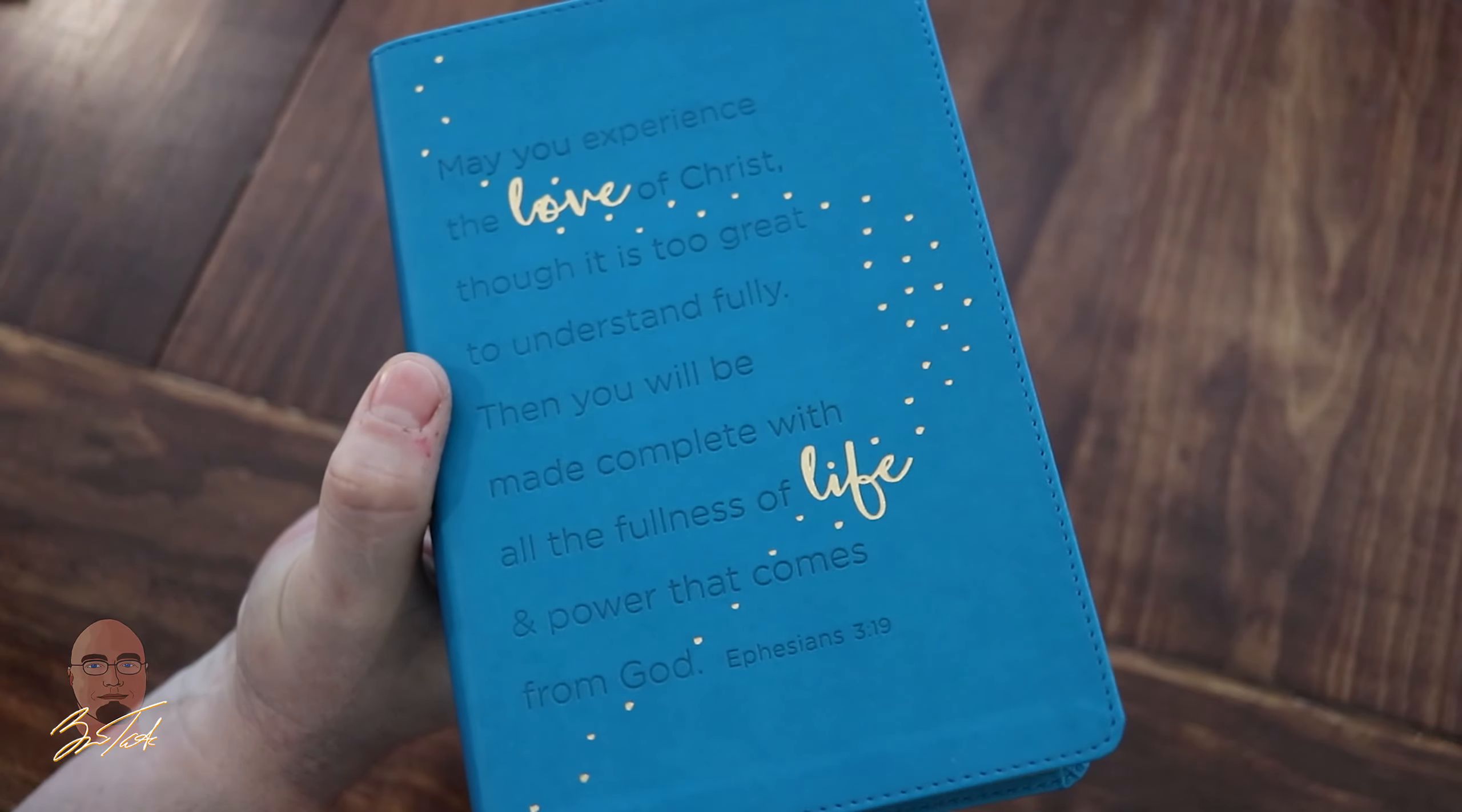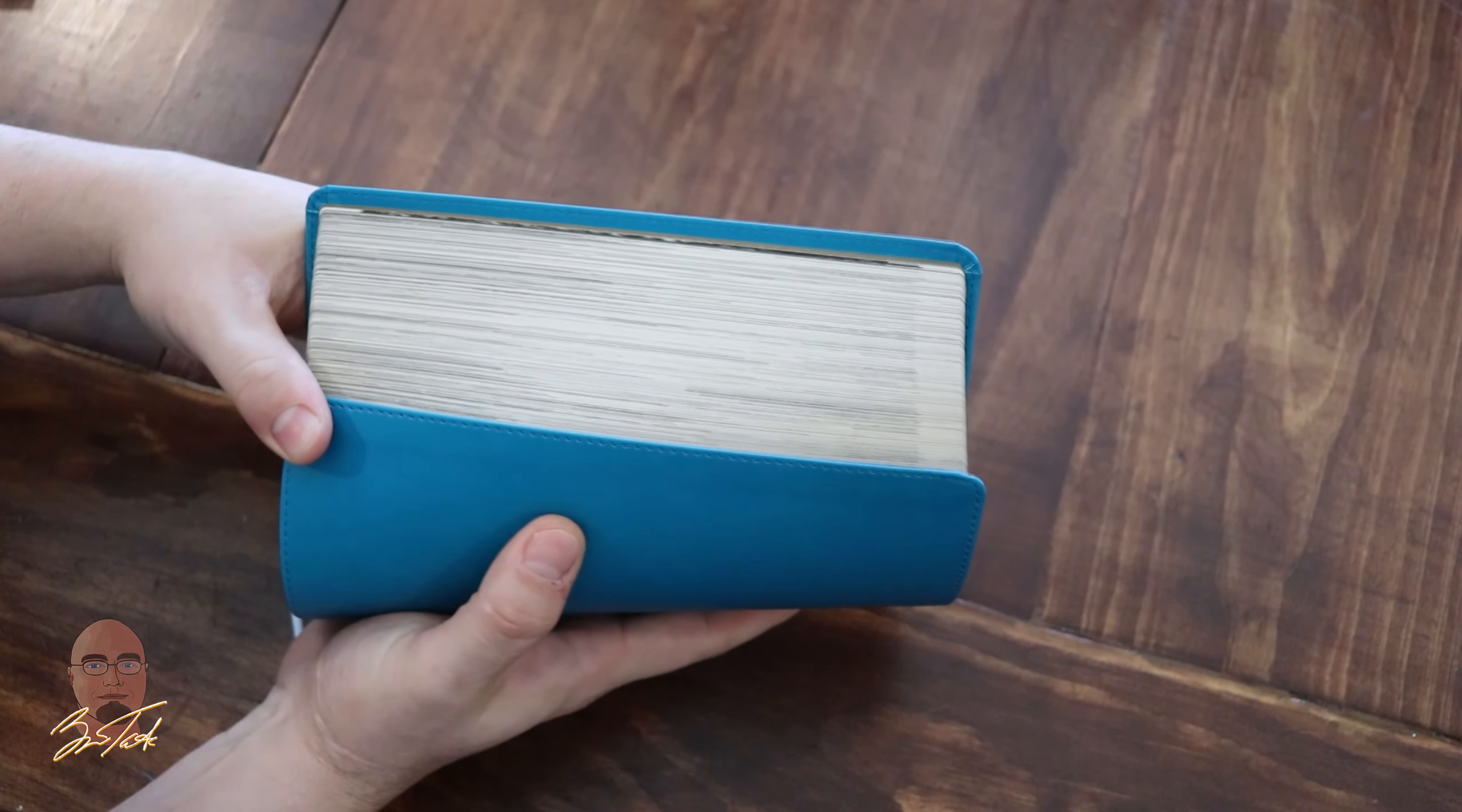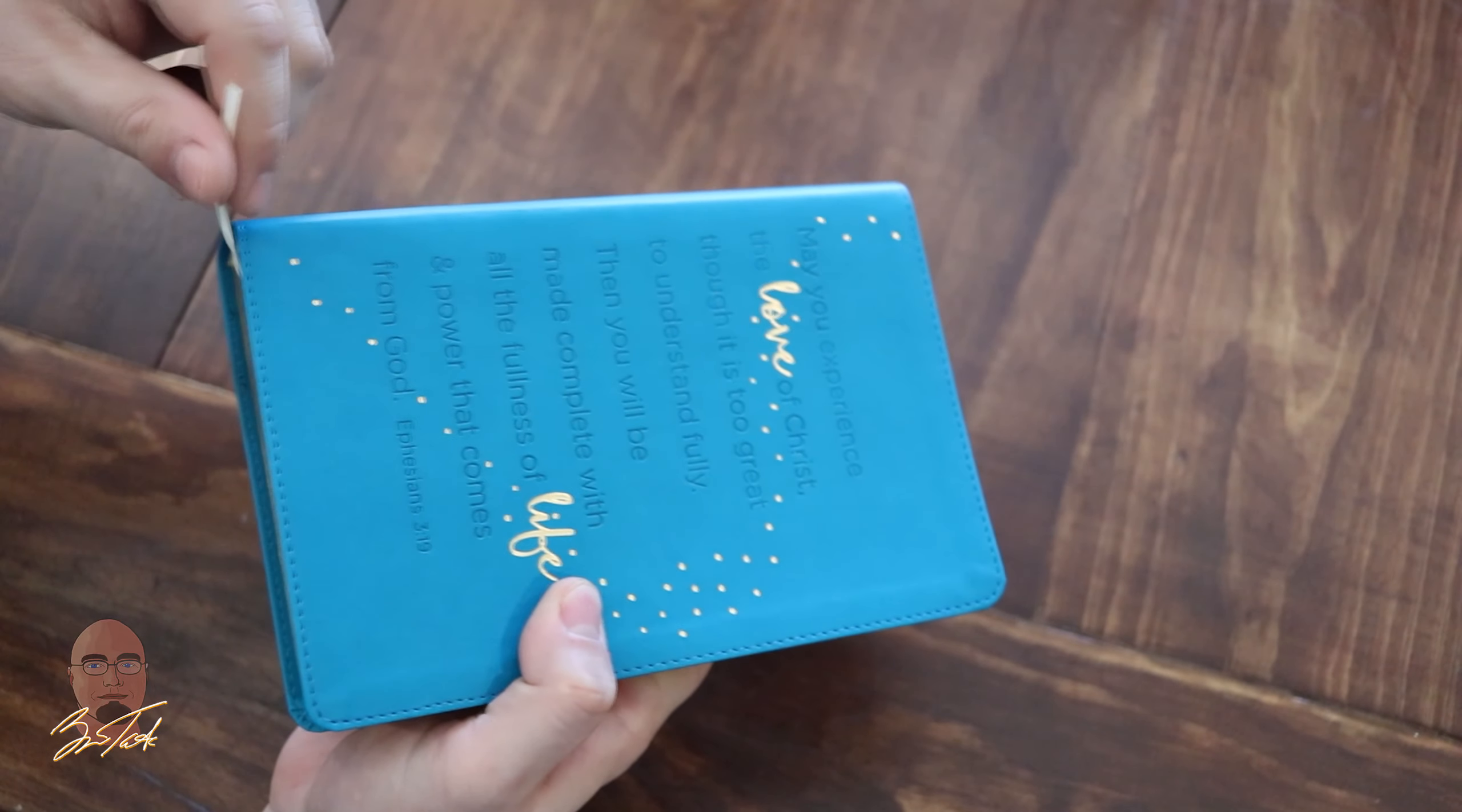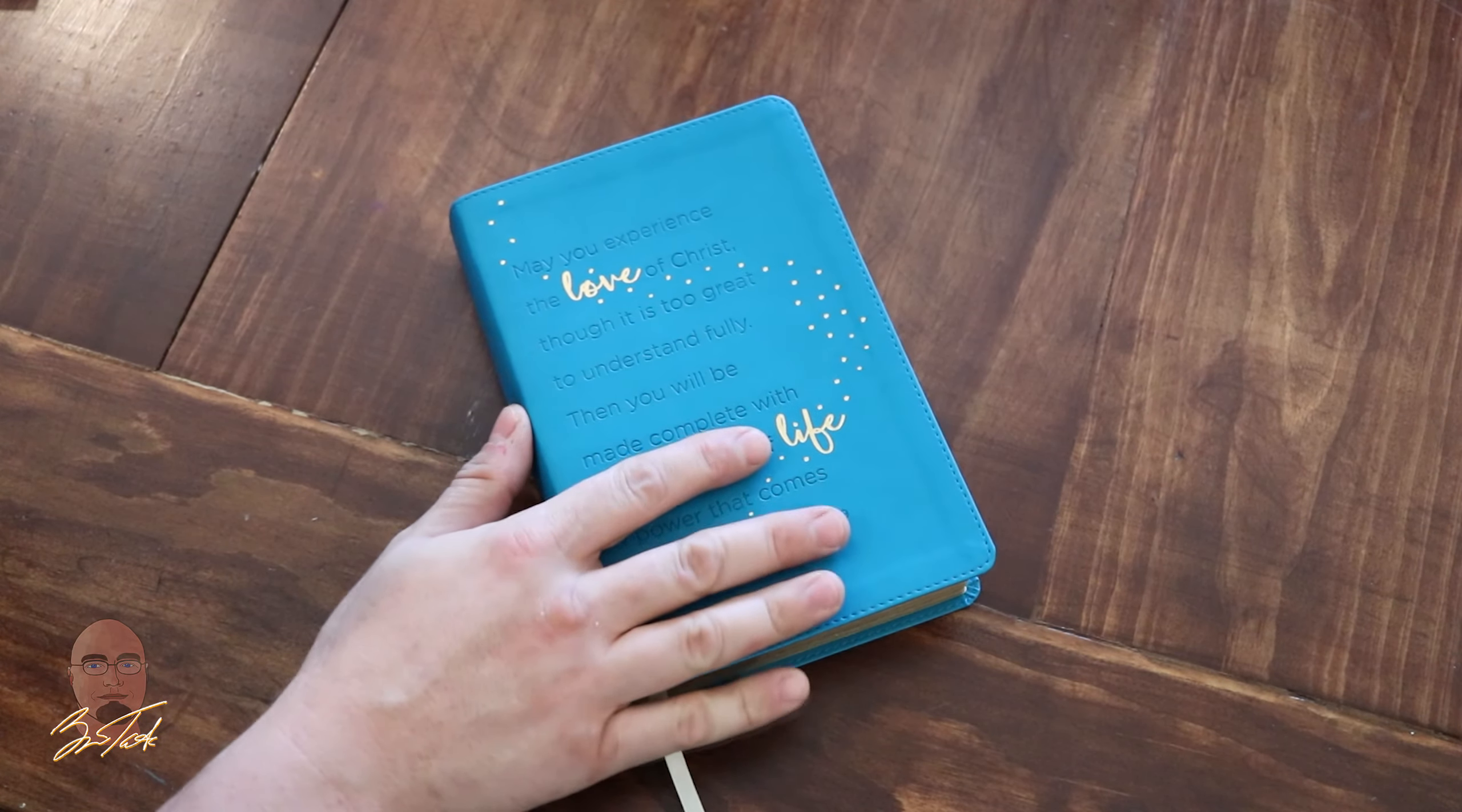The words 'love' and 'life' are in gold with perimeter edge stitching. The gold gilding is really nice, nothing you wouldn't expect from Tyndale. There is no art gilding; you can see the page edges are just colored from the different graphics on each page, and you have one ribbon. This is a sewn edition.